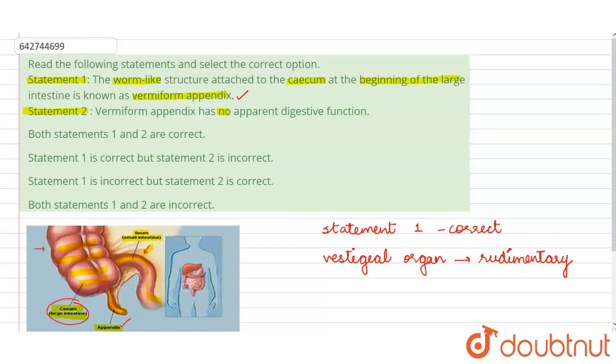Earlier this vermiform appendix was used as a digestive organ in early human beings, but now it has got only some of the symbiotic microorganisms which stay in this. Okay, symbiotic microorganisms. So this is the only function of...